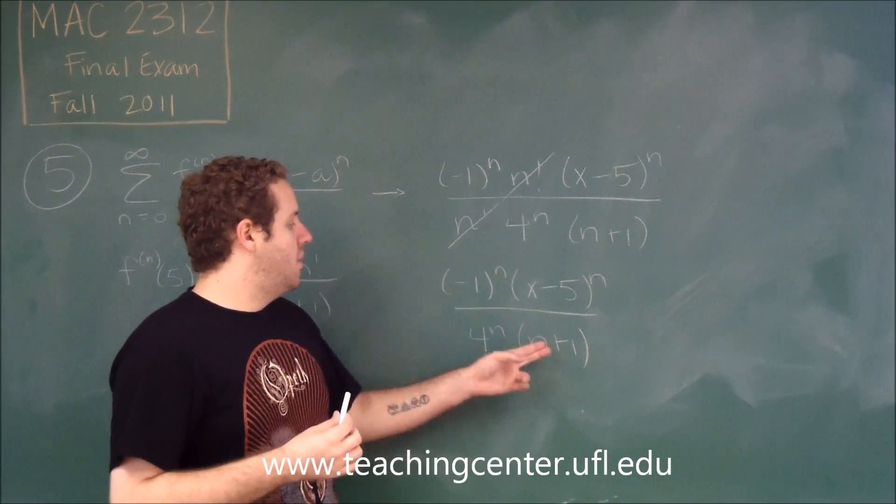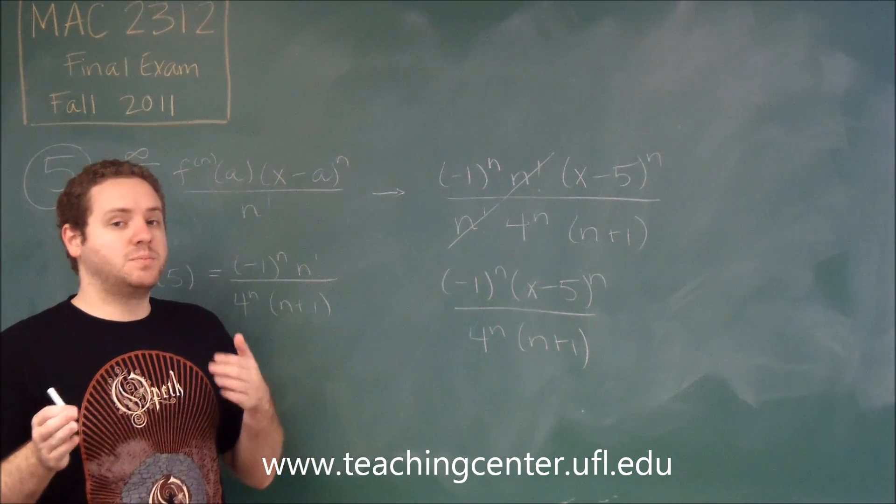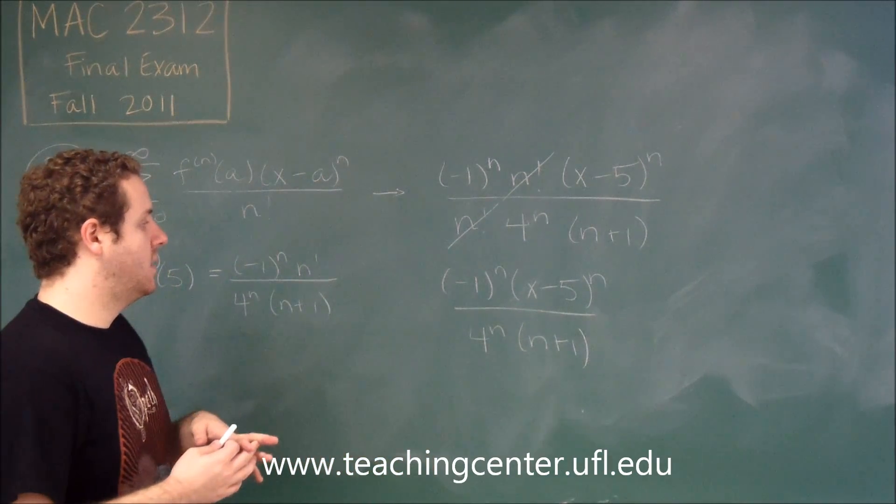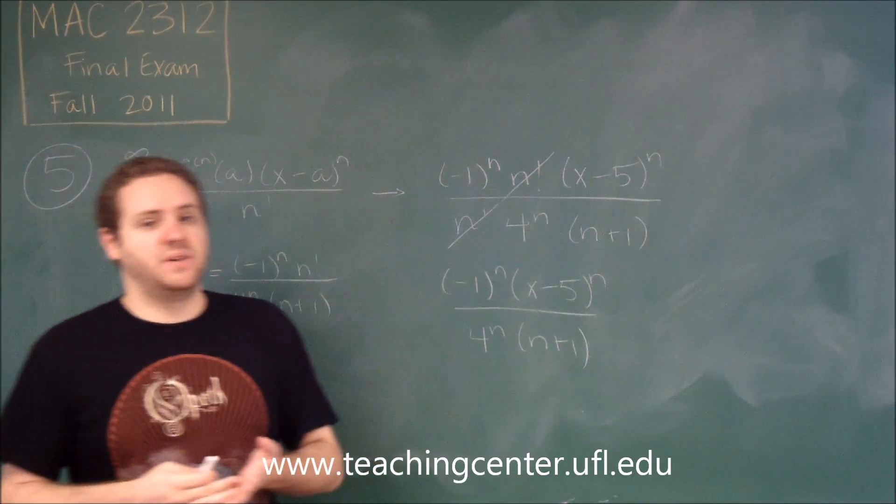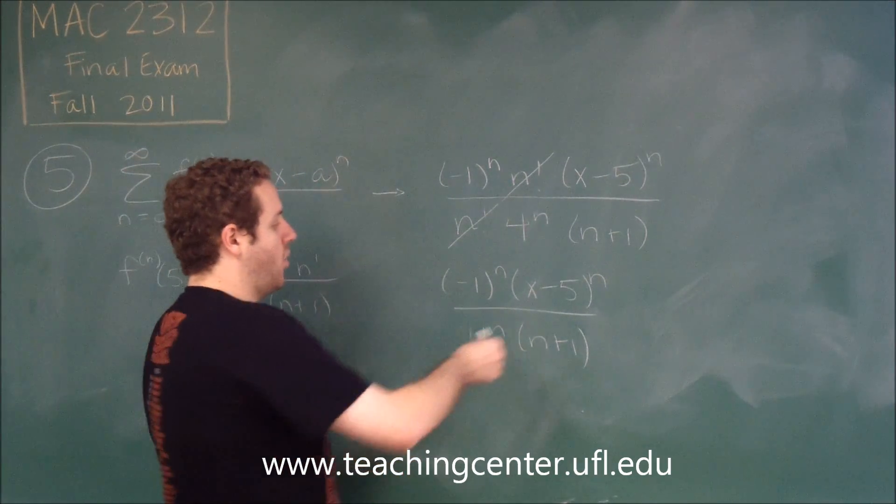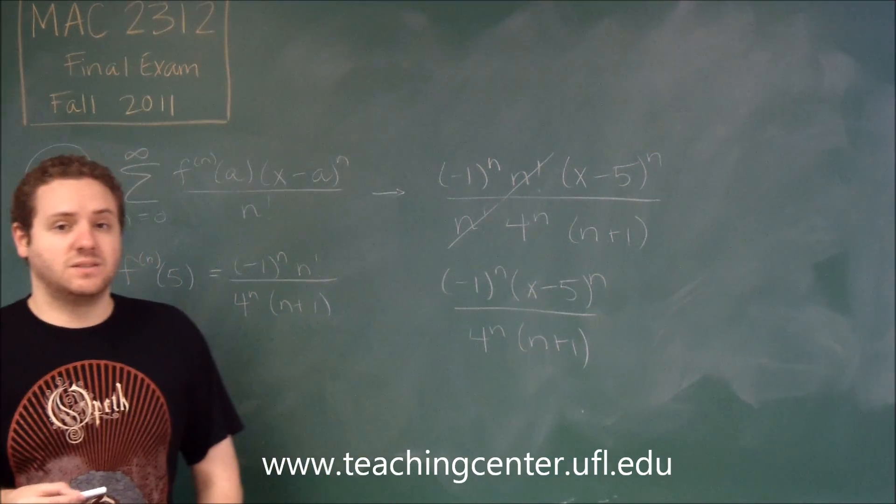So these two might affect the convergence or divergence at the endpoints, but they're certainly not going to affect anything within the radius. It didn't ask you to figure out the exact interval, just the radius. So in that case, it's always going to be this constant that you're comparing it to. In this case, it's going to be 4.